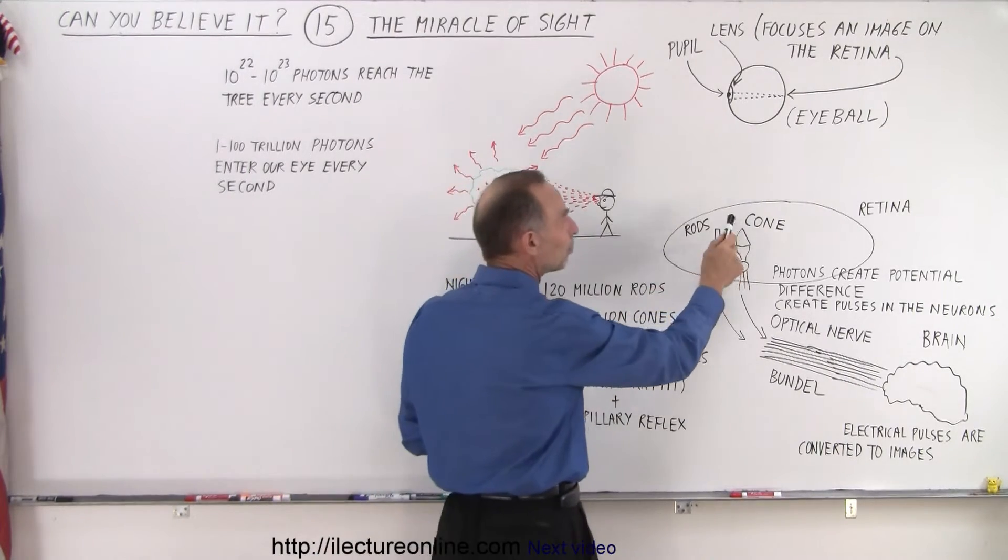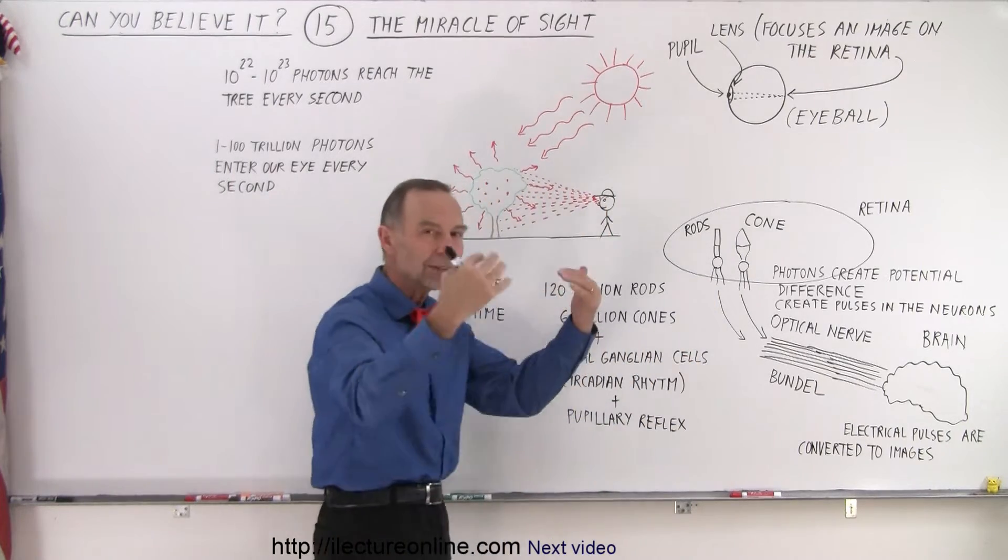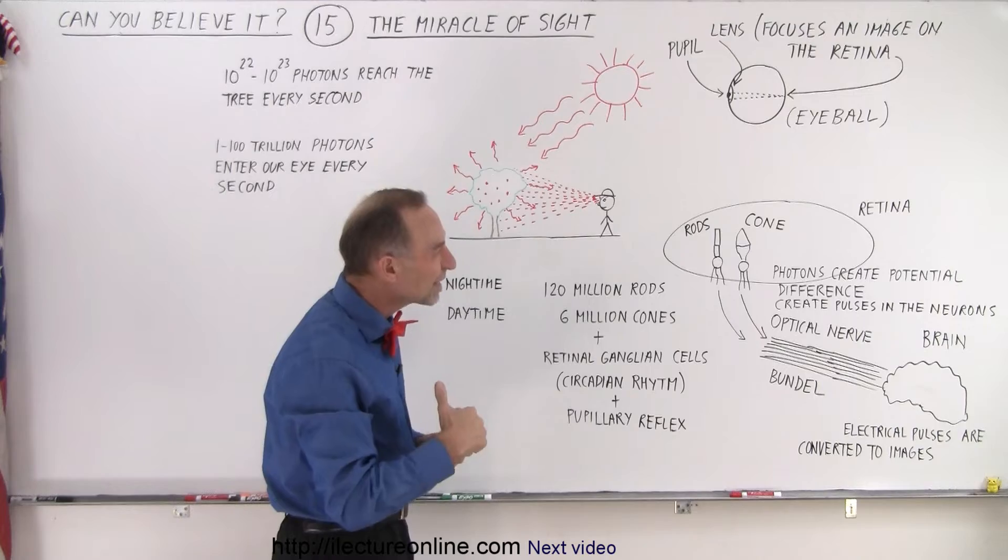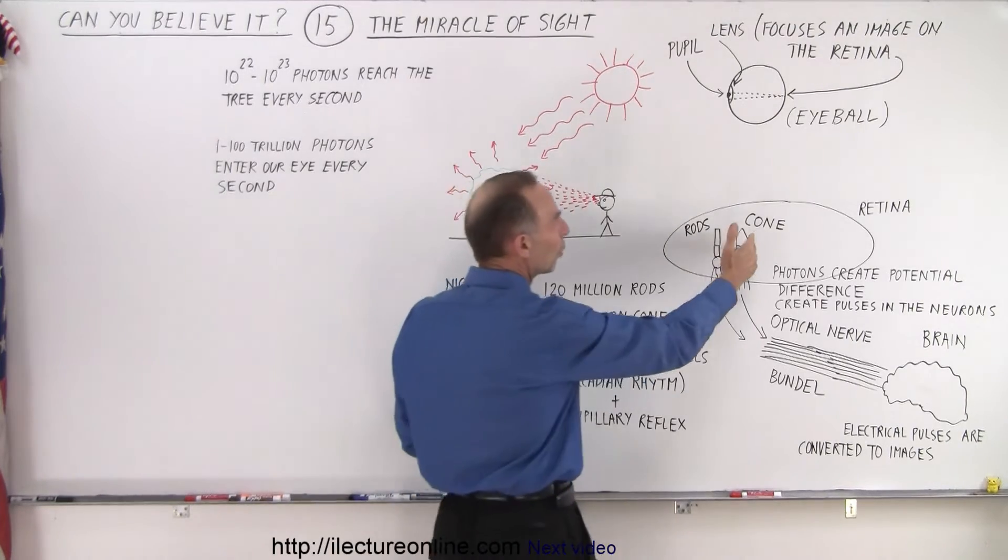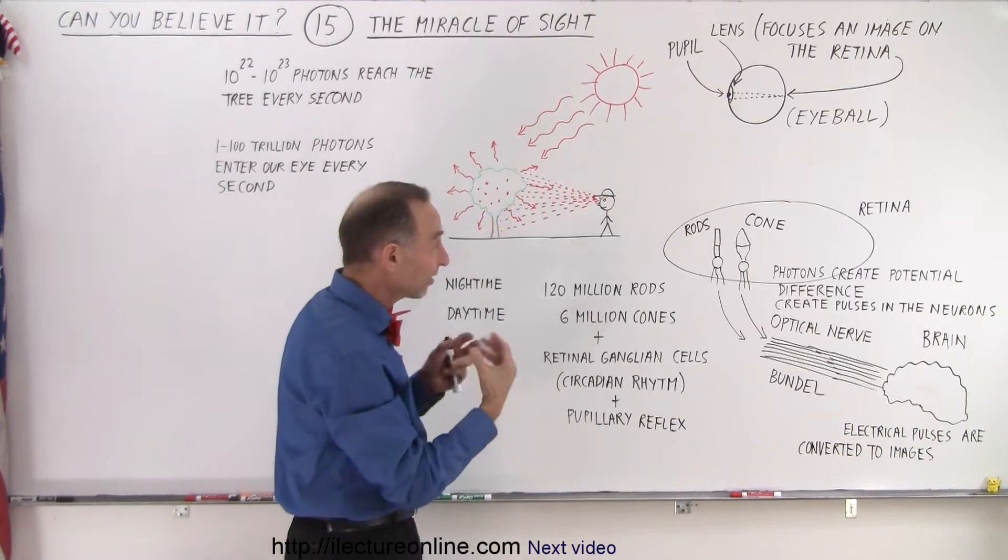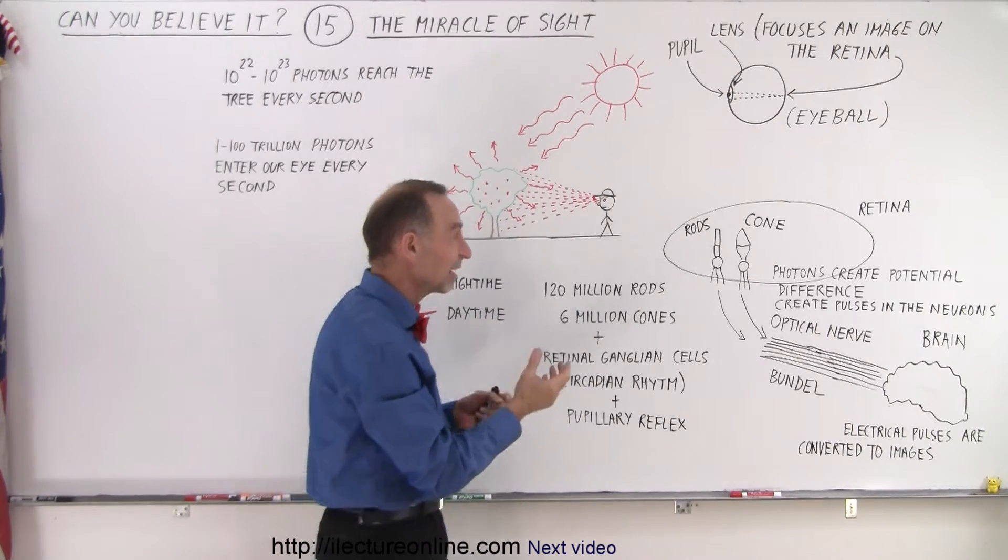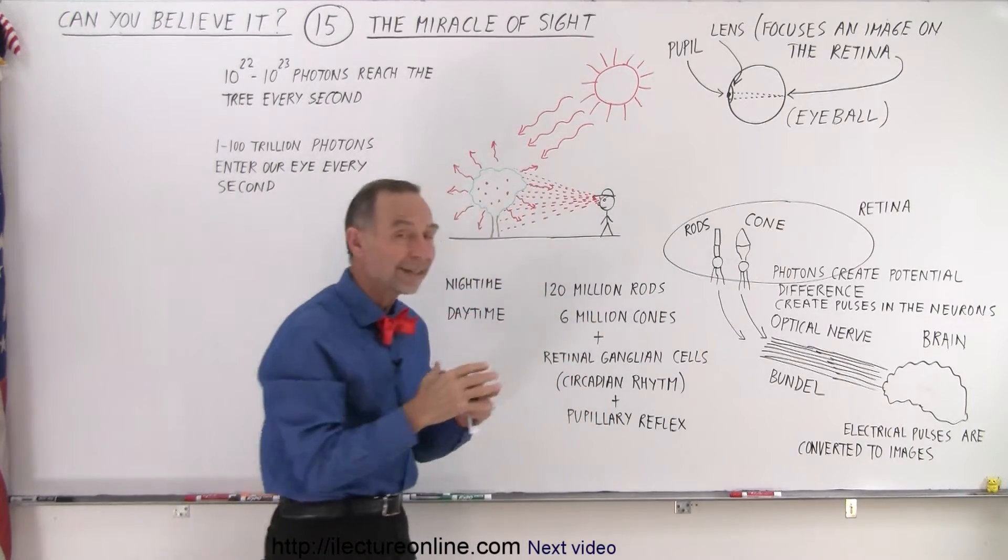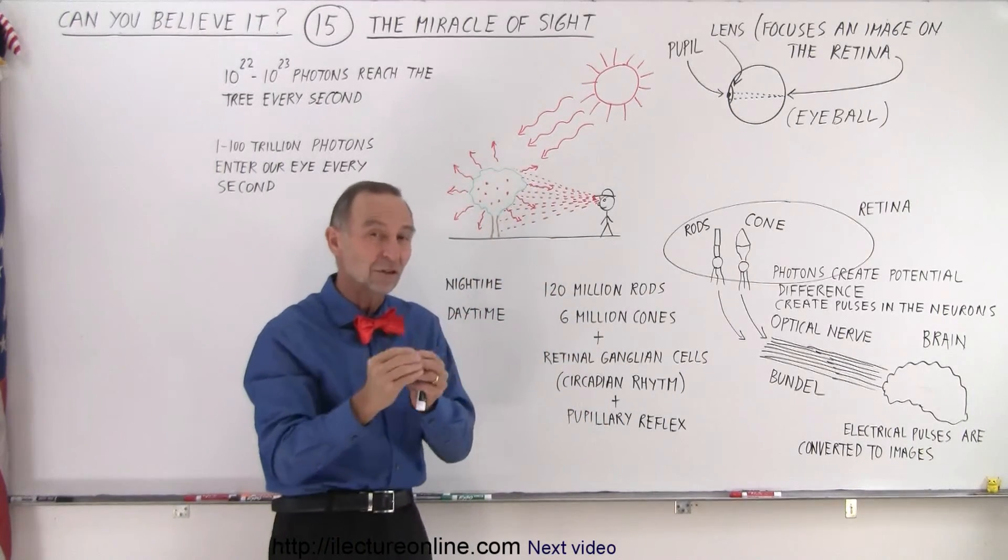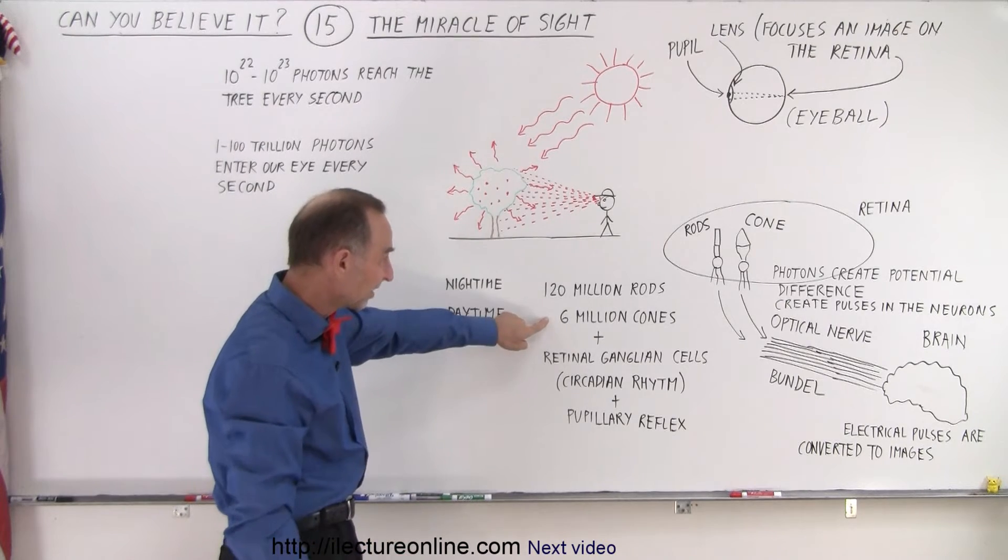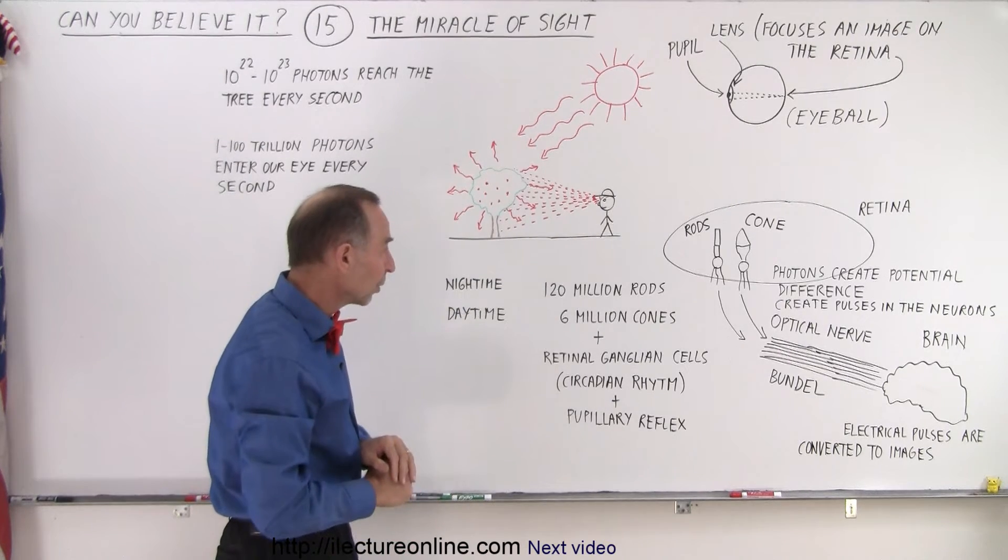The cones, however, require multiple photons, many photons to hit them at the same time for signals to be triggered. There's three different kinds of cones: cones that can see light in the longer wavelengths, like red; cones that can see in the intermediate wavelengths, like yellowish-green; and cones that can see the light in shorter wavelengths, such as the blue light and the purple light. There's about 6 million cones, about 120 million rods.